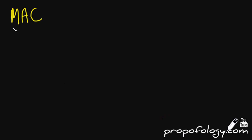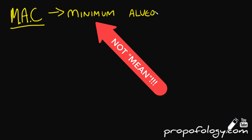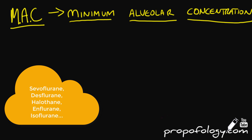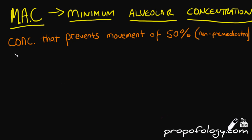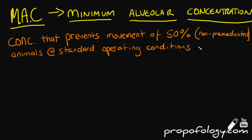MACs, or minimum alveolar concentrations of inhalational agents, are talked about quite a lot. These are volatile agents such as sevoflurane, desflurane, halothane, and isoflurane. The MAC is the concentration of the volatile agent that prevents movement in response to skin incision in 50% of unpremedicated animals, studied at sea level or 1 atmosphere, in 100% oxygen.